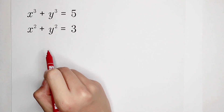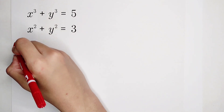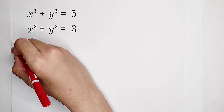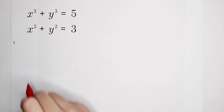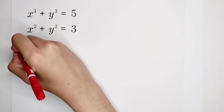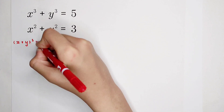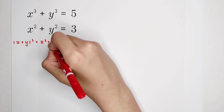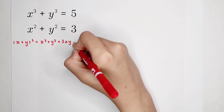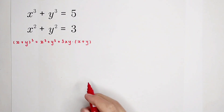To do that, we use this formula — memorize it now. The first formula is: x plus y, all cubed, is equal to x cubed plus y cubed plus 3 times xy times x plus y.